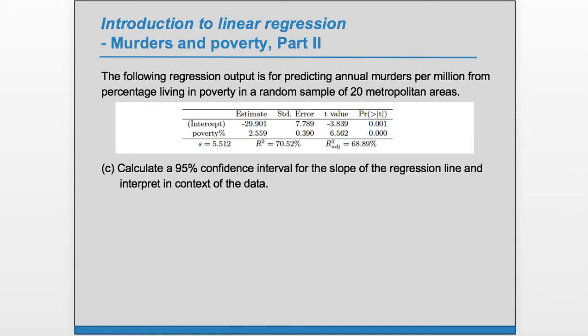Part C: calculate a 95% confidence interval for the slope of the regression line and interpret in context of the data.